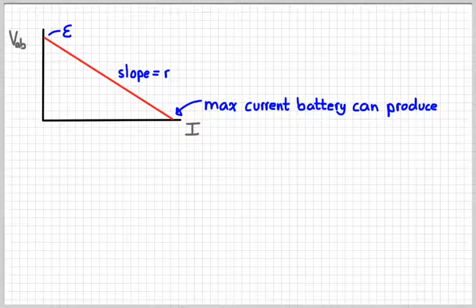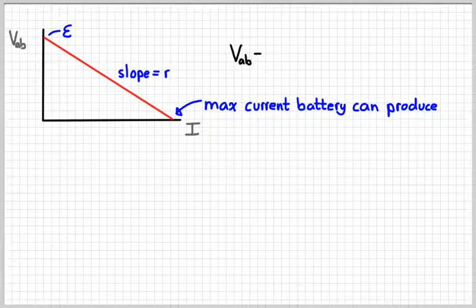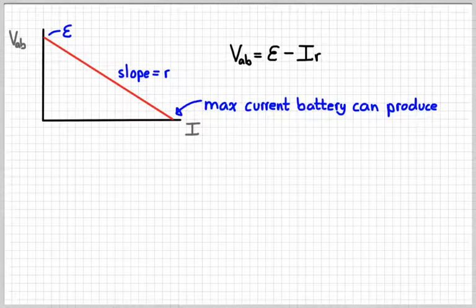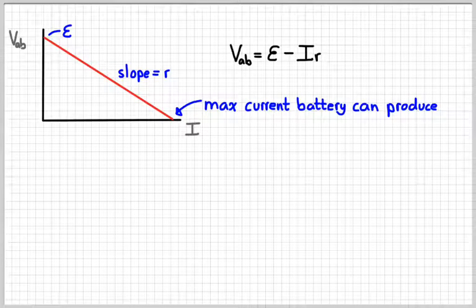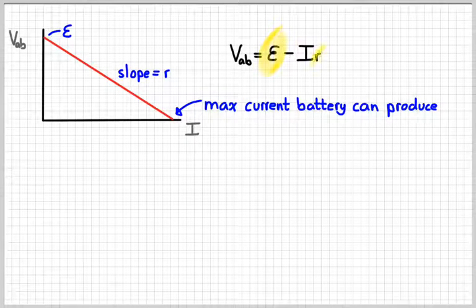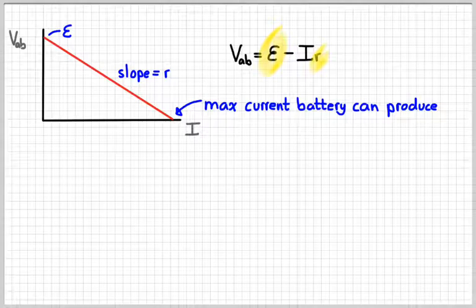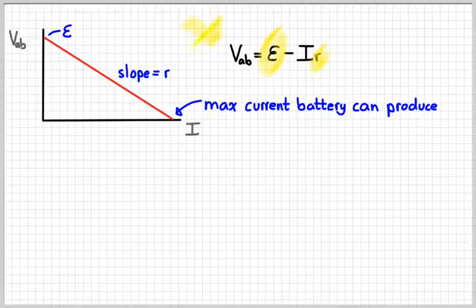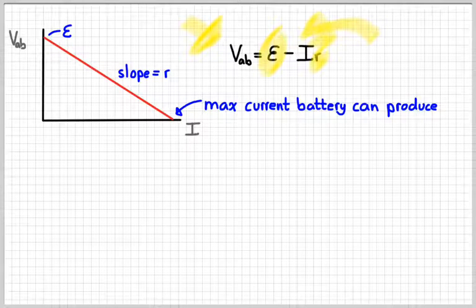At some point the voltage is going to drop to zero, and then you can't draw any more current from the battery. And again, there's our equation. And that's just a y equals mx plus b equation. Where our y-intercept is right there. Our slope is right there. And then we put voltage on the y-axis and current on the x-axis.